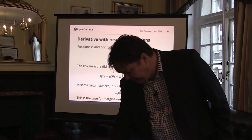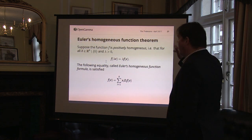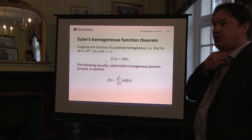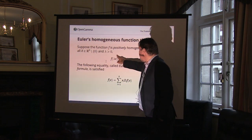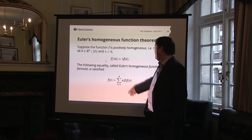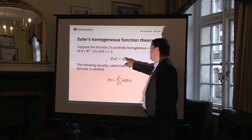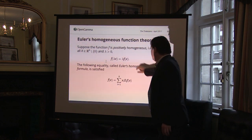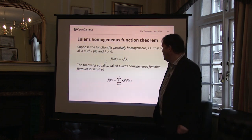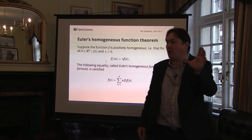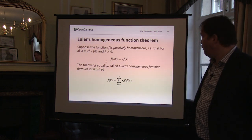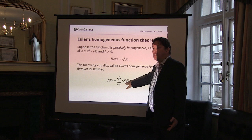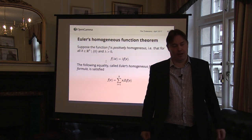To do attribution I need a second formula — Euler's theorem about homogeneous functions. If you have a function which is homogeneous of degree one, meaning if you double your position you double your risk, then you can write your function f as a sum over the parts, and each term involves the computation of the partial derivatives — the sensitivities. That's where my AD methods will be useful.